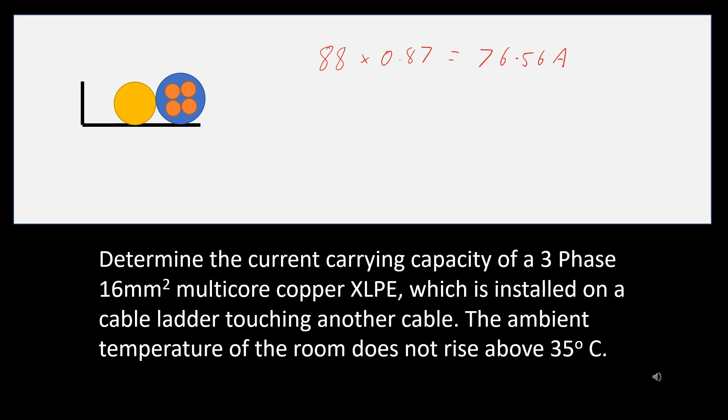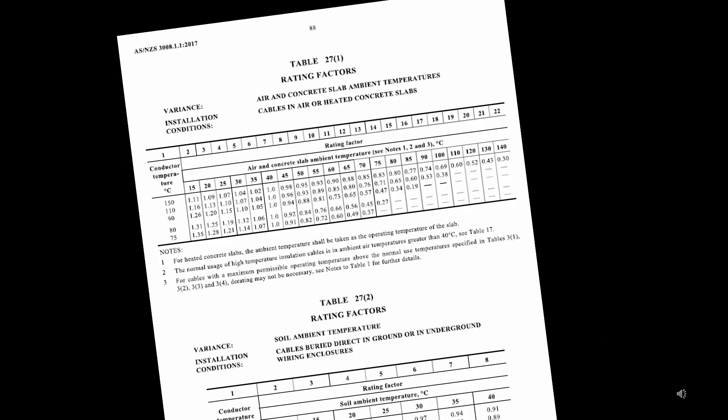So, this means that the current carrying capacity of the cable can be uprated because of the cooler temperatures. Table 27.1 should be able to help us out with that one.